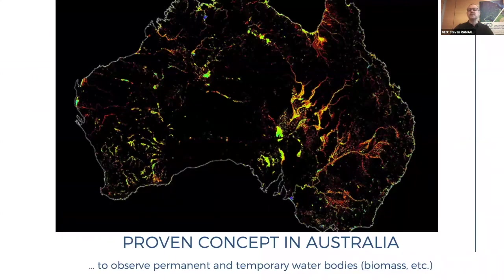Water Observations from Space was the first algorithm I saw from Digital Earth Australia, and with their large geography and tough climate, being able to provide this capability for all of Australia, based on open data from decades of Earth observation, was really powerful.